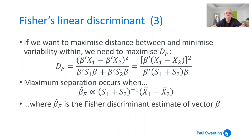You can take out the beta-transpose and beta from those equations and rearrange to find the value of beta where maximum separation occurs. Beta-hat F — the estimate of the Fisher discriminant vector beta — is proportional to (S1 + S2)^(-1), the inverse of the sum of the covariance matrices, multiplied by (x-bar-one minus x-bar-two), the difference between those averages. So it's a relatively straightforward bit of matrix algebra to get the estimates for vector beta.